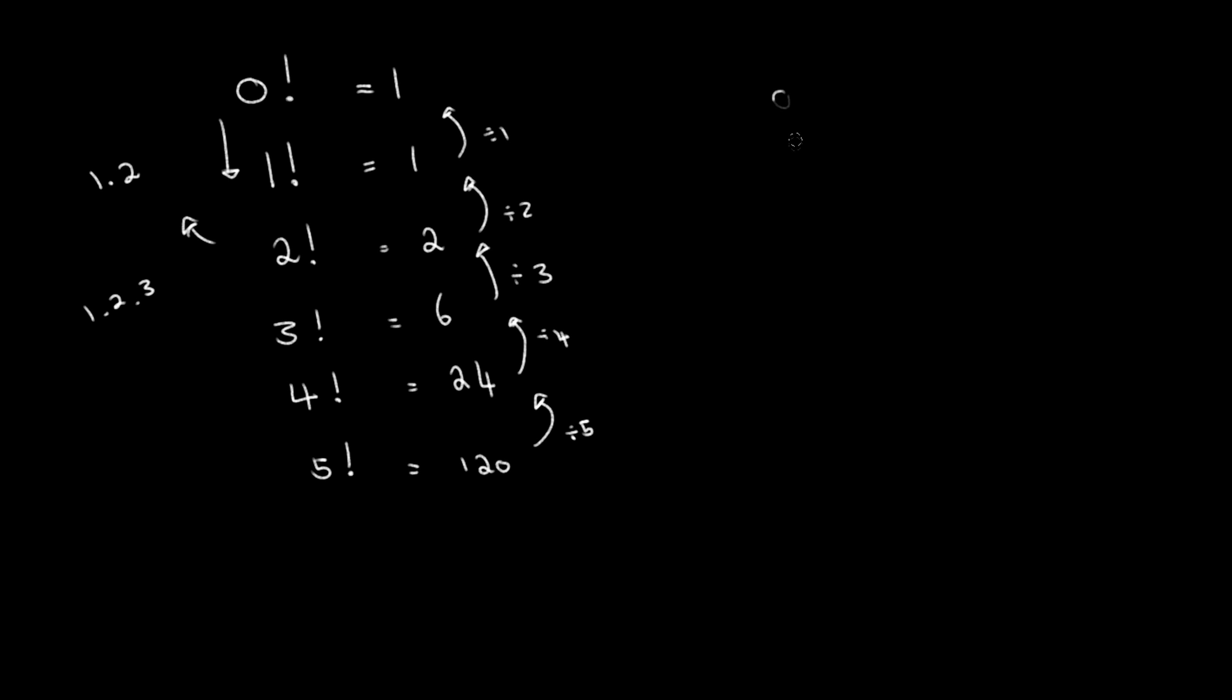Now what about 0 to the power of 0? Why is that equal to 1? Well, for this we can look at some limit concept. So we can say the limit as x approaches 0 for x to the power of x.